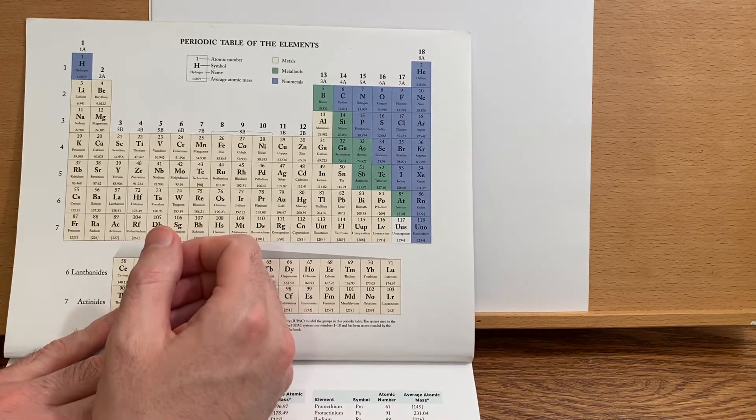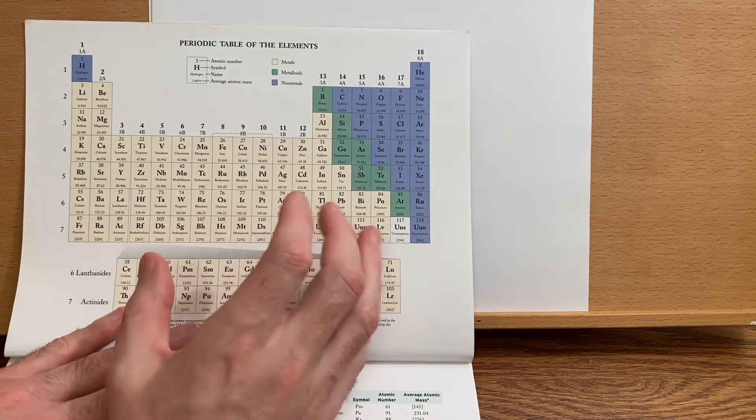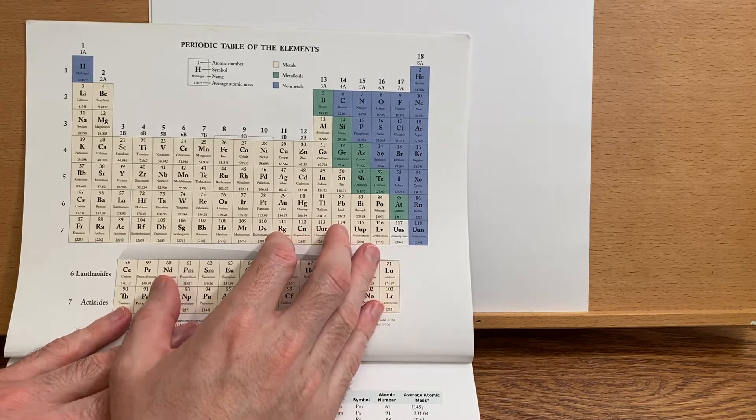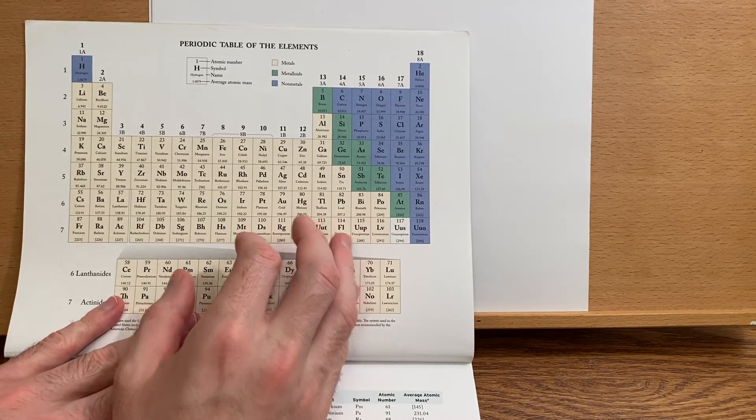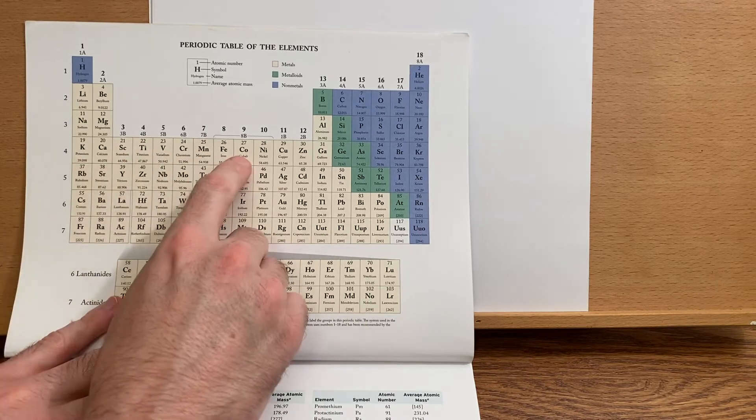So remember when we're determining the electron configuration of a transition metal element, we count over like that.